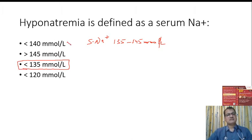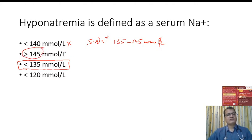Some students might think that the middle value is relevant, but it is the lower limit we need to consider. Below 135 millimoles per liter is hyponatremia, and if values go above 145 millimoles per liter, that is the definition of hypernatremia.